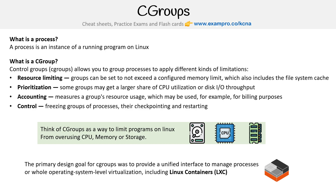I came across cgroups even recently when I was using Gitpods, because I wanted to run Kubernetes on Gitpods. But I found out that at the time, and probably still, they're using Docker with a version that is using cgroups version one. And so to support Kubernetes running within Docker — which is kind of weird, running Docker inside Kubernetes to run Docker — it needed version two. So cgroups is something you definitely will come across, and that's why I mentioned it here.